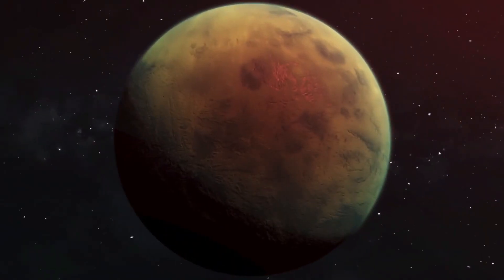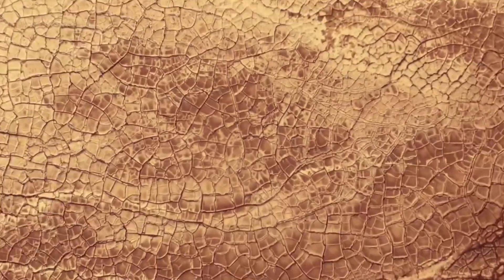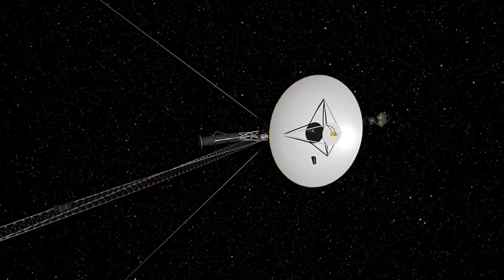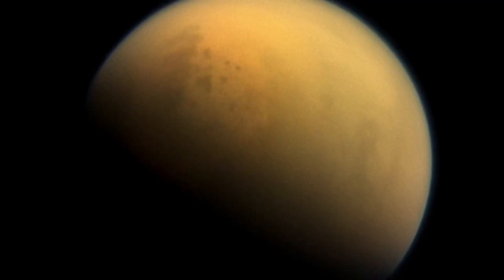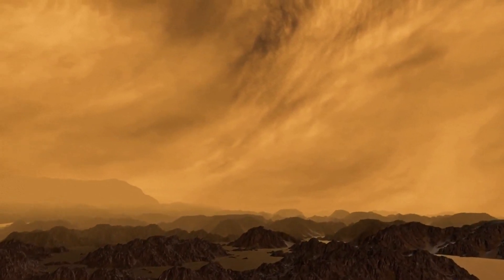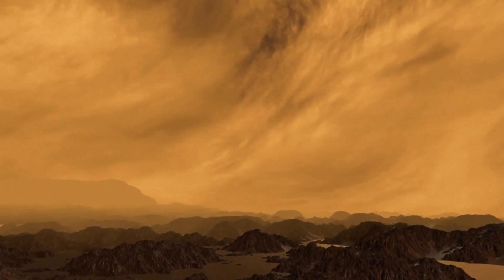And then there was Titan, Saturn's largest moon, cloaked in a thick golden haze. It refused to give up its secrets easily, but Voyager's instruments saw something through the smog and discovered an atmosphere thicker than Earth's. Mostly made of nitrogen and methane, a chemistry not unlike what our planet may have looked like billions of years ago.